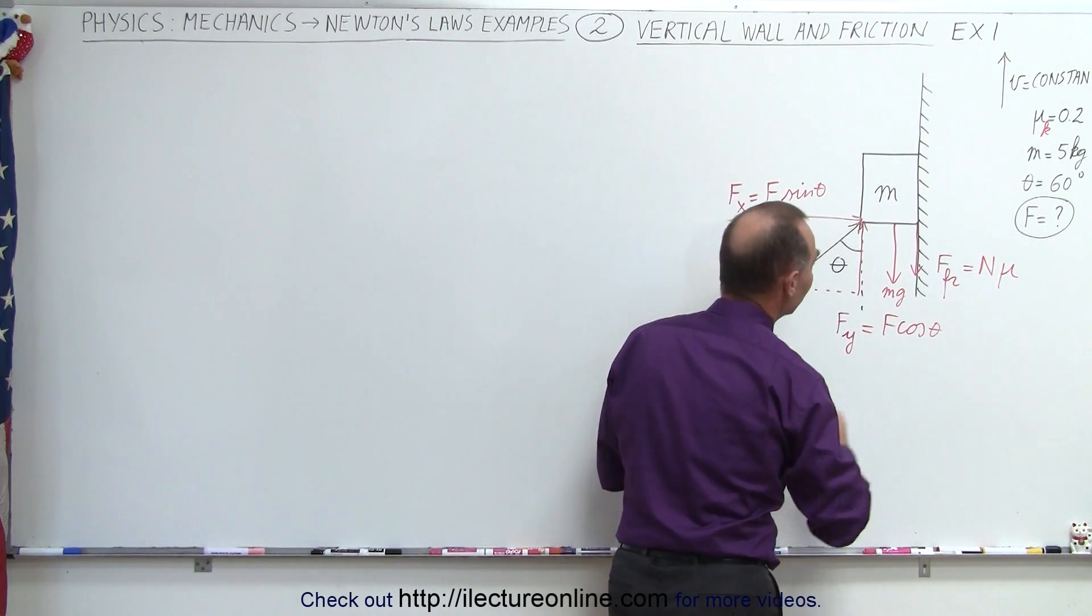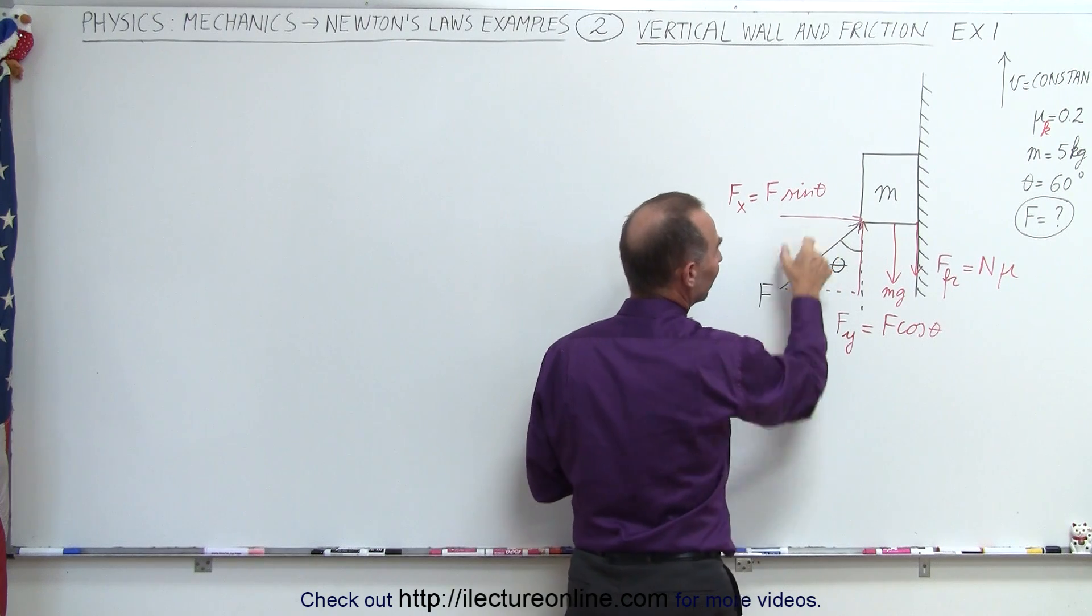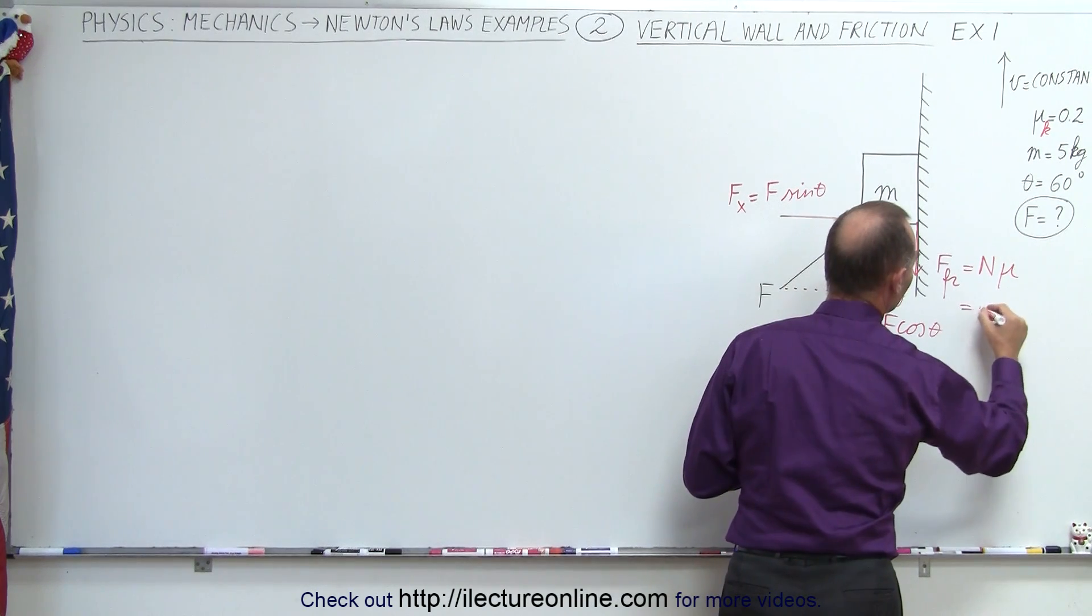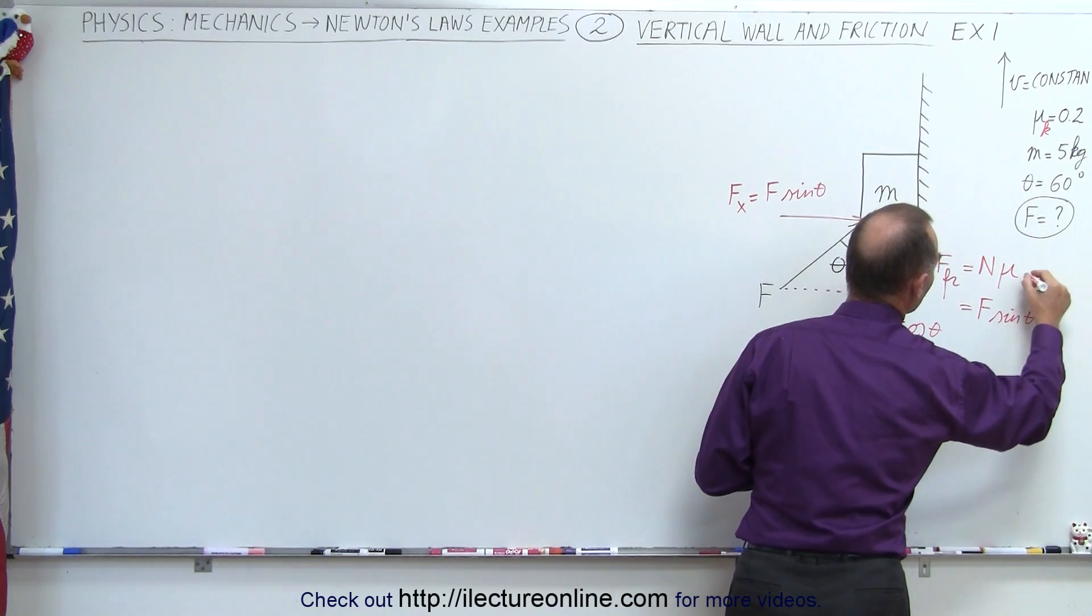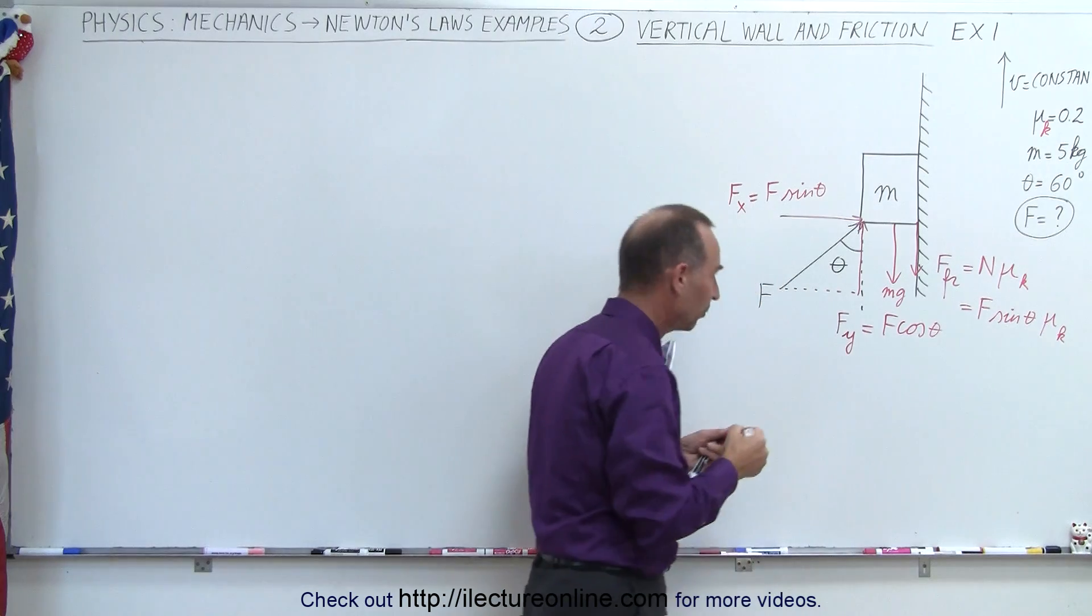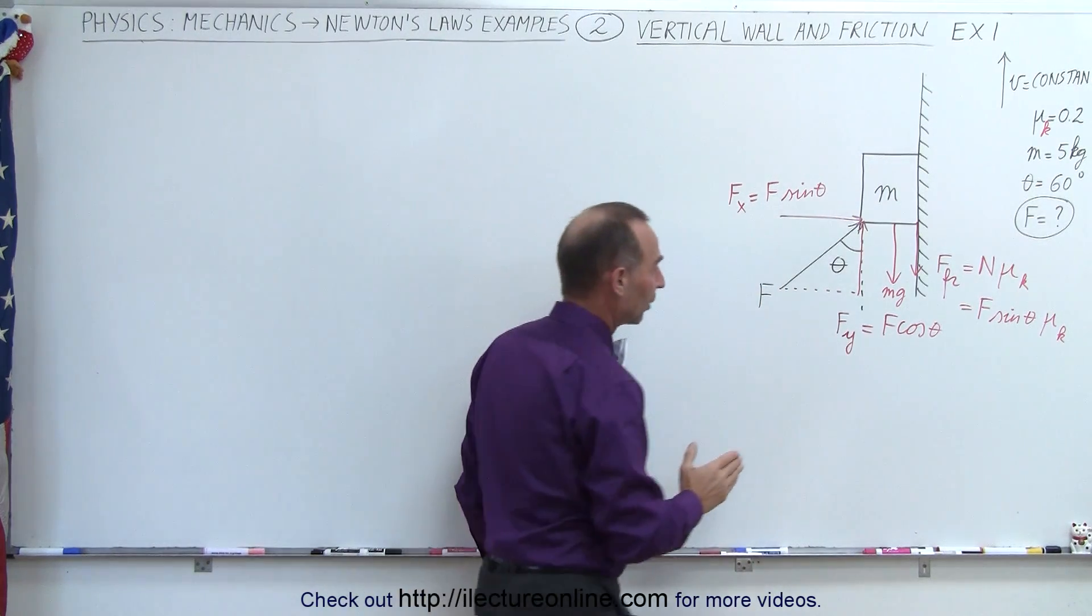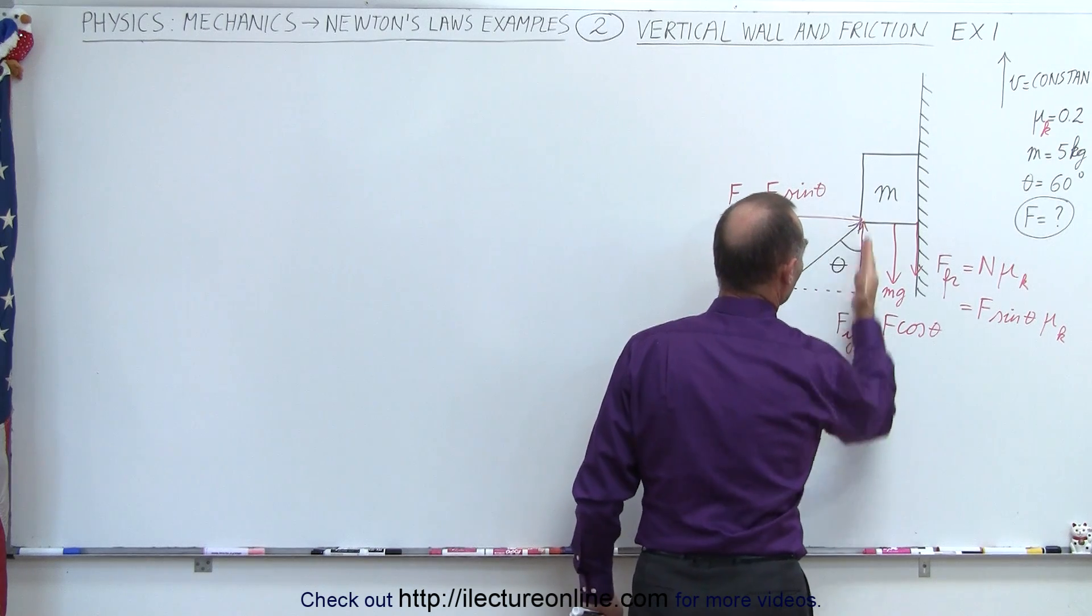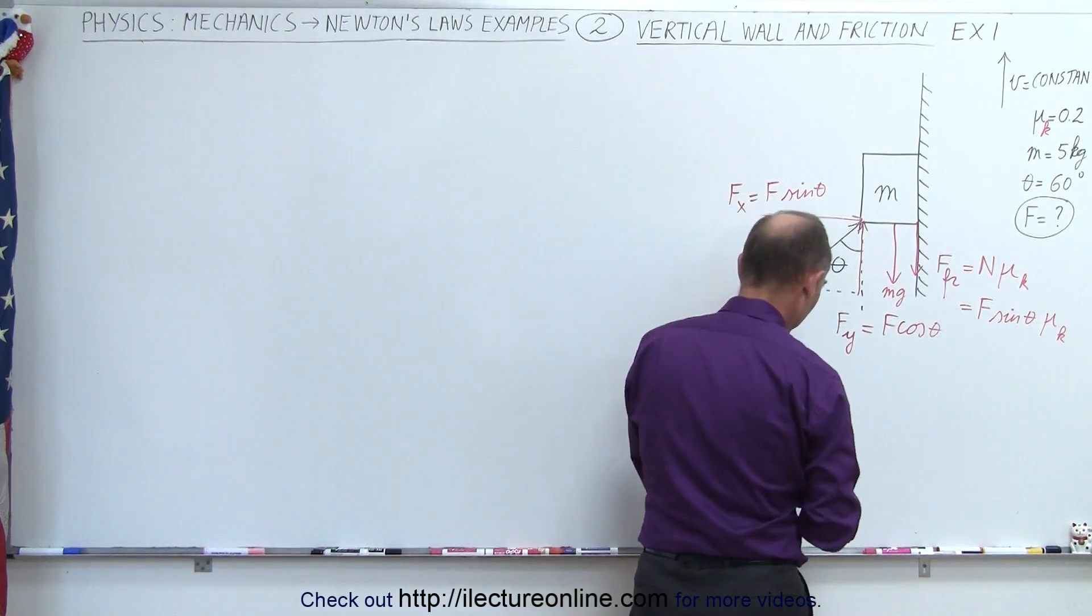Now in this case, the normal force is provided by the horizontal component of this force, which is F sine theta, so therefore the friction force is F sine theta times mu, and of course it's mu sub k, since the block will be moving at a constant speed. So now we've identified all the forces in the y direction: the component of force pushing upward, the weight, and the friction force.